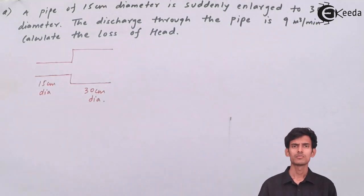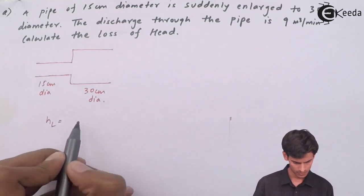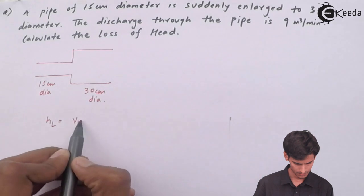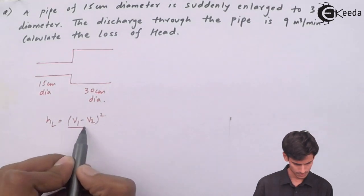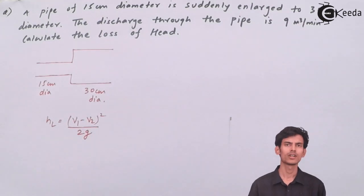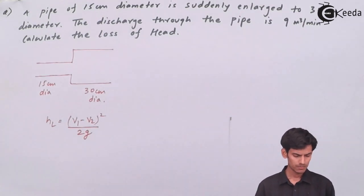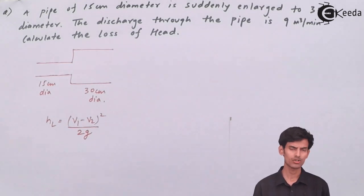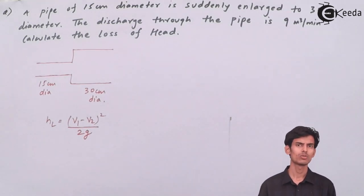There's sudden enlargement and we know the formula for sudden enlargement. The head loss due to enlargement - we've already derived the formula. So this is the formula for head loss: hL = (v1 - v2)² / 2g. Before substituting values in this formula, you need to know v1 and v2. v1 is the velocity of flow in the 15 centimeter diameter pipe, and v2 is the velocity in the 30 centimeter diameter pipe. So you need to calculate v1 and v2 first.